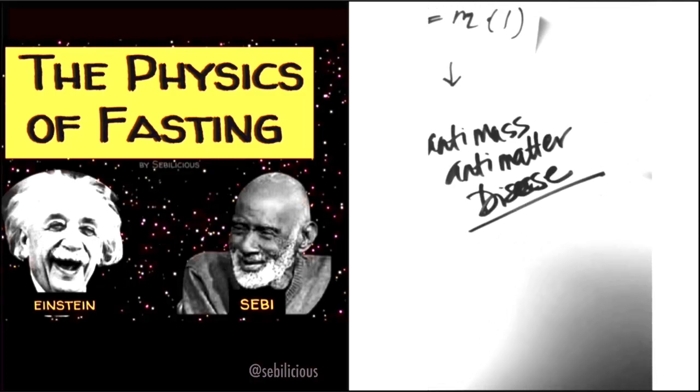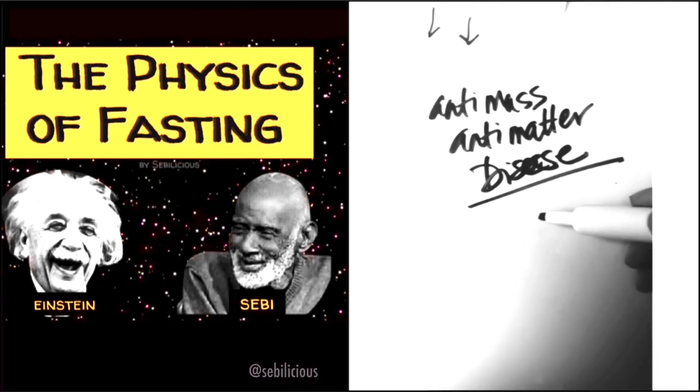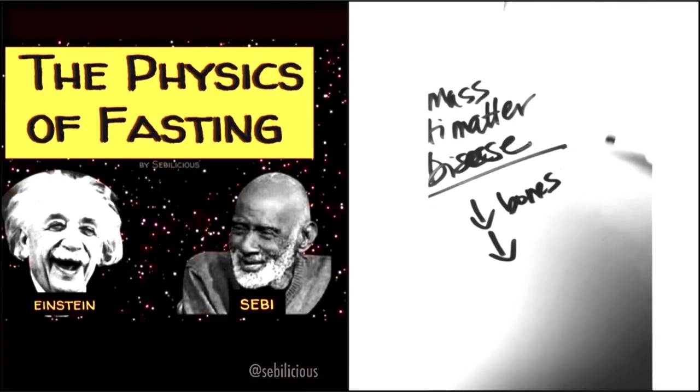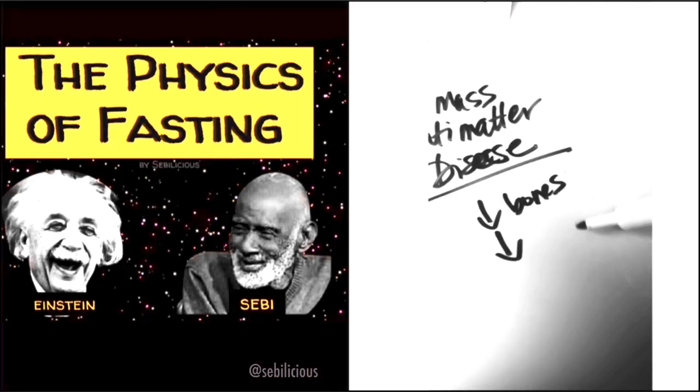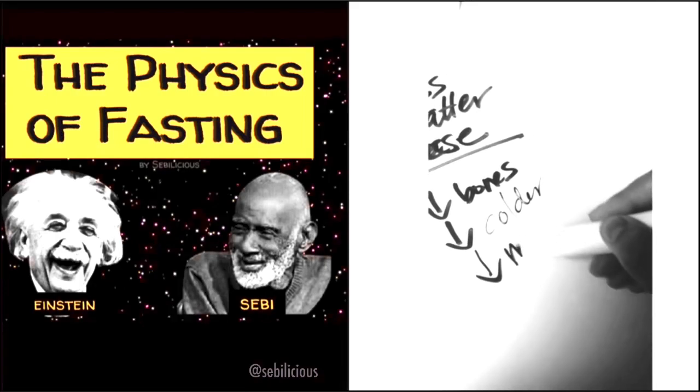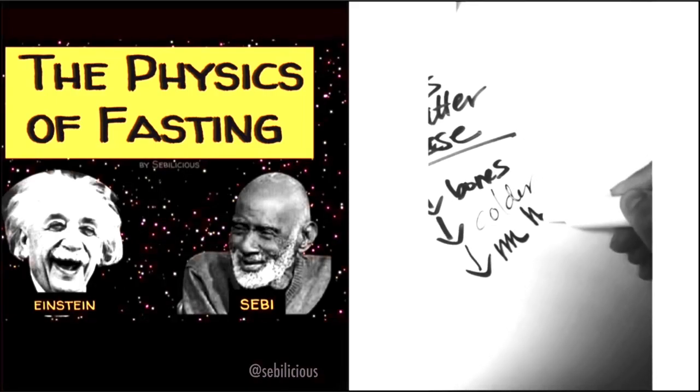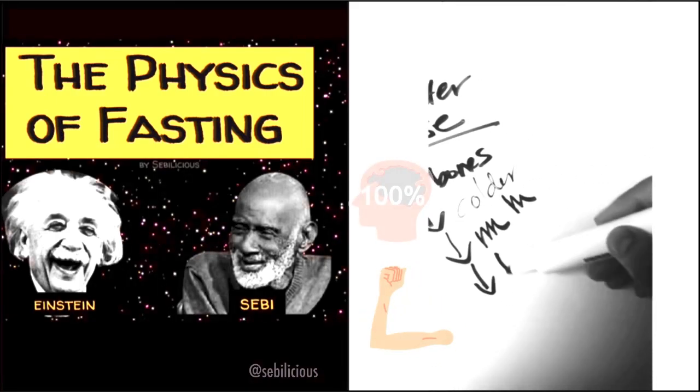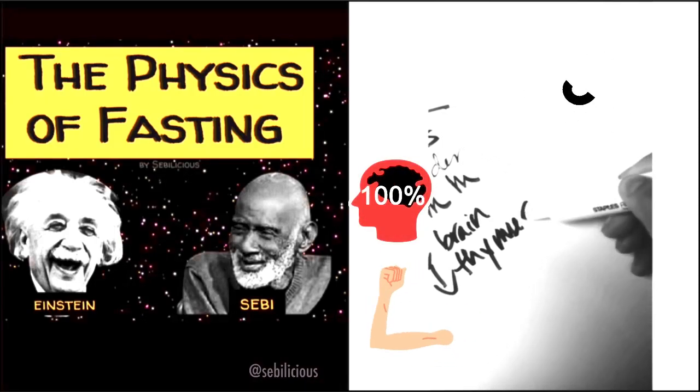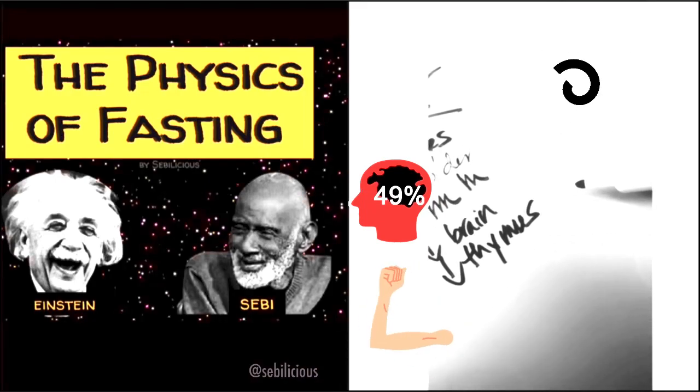As we grow older, our bones decrease, we get shorter, our electricity decreases, we get colder. Our muscle mass decreases. Our brain actually shrinks. Our thymus shrinks, which is part of the immune system that makes white blood cells.